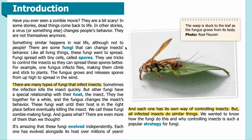There are some fungi that can change insects' behavior. Like all living things, these fungi want to spread. Fungi spread with tiny cells called spores. They use tricks to control the insects so that they can spread these spores better. For example, one fungus infects flies, making them climb and stick to plants. The fungus grows and releases spores from up high to spread in the wind. There are many types of fungi that infect insects.